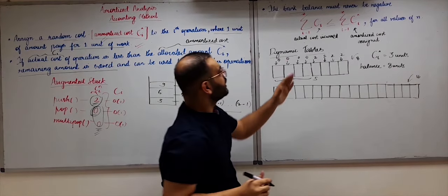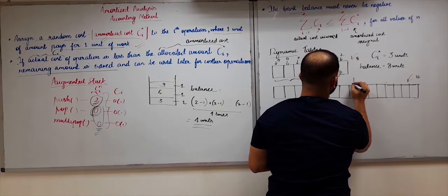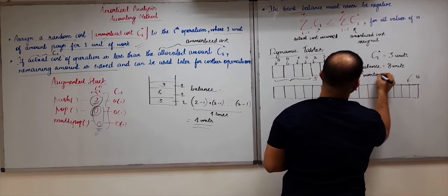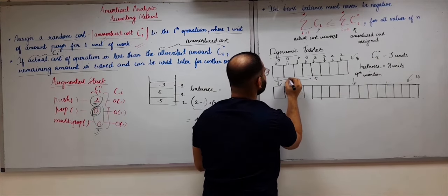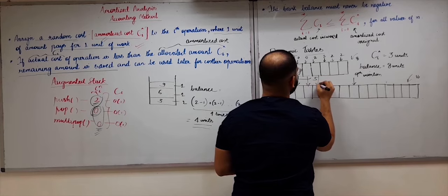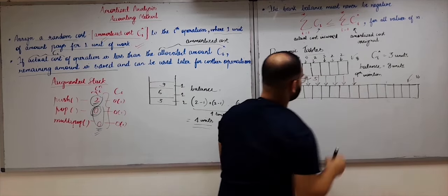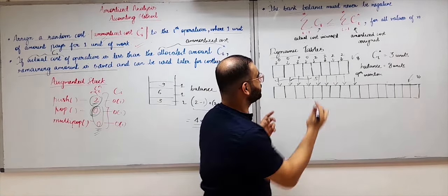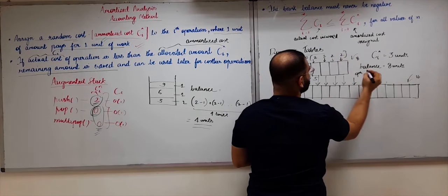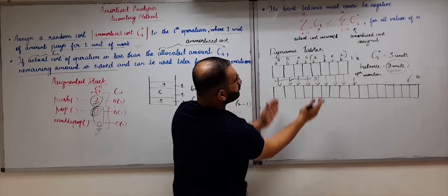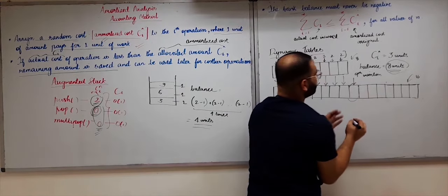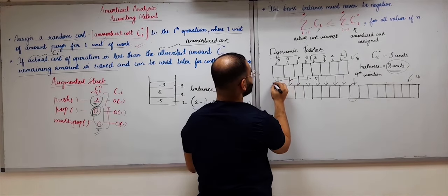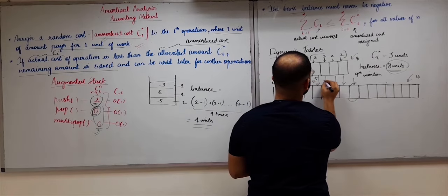When we go to do the ninth insertion, apart from performing the insertion itself, we also have to copy all 8 existing elements into the doubled dynamic array. Do we have the balance for that? Yes — the 8 units of balance saved from previous insertions can be used to copy all those elements. From the ninth insertion onwards only 1 unit of time is required, and after copying the balance goes back to 0.